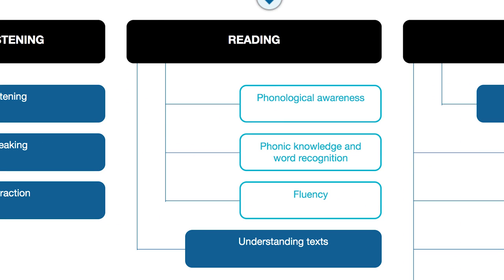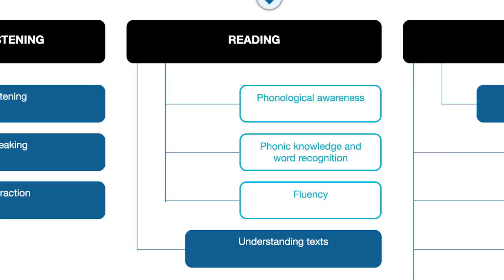Under the reading element are the key decoding threads of phonological awareness, phonetic knowledge, and word recognition and fluency. These threads are usually considered as constrained skills, because most students are able to complete all of the levels of these skills by the end of the early years of primary school. Also in the reading strand is the holistic thread called understanding texts, where students' skills in reading, understanding, interpreting, analysing and evaluating a range of print and multimodal texts are described.